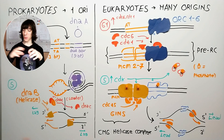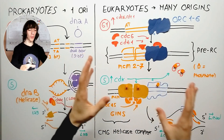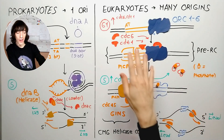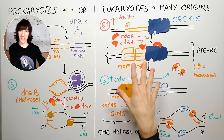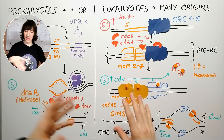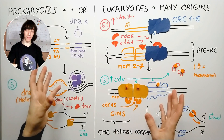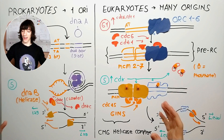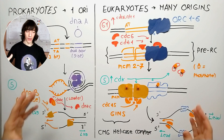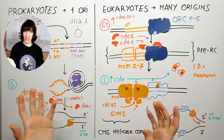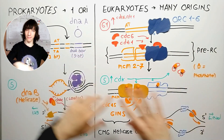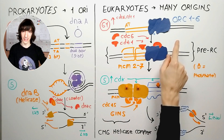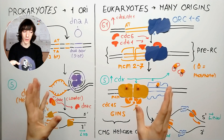Now that we are done with prokaryotes, it's time to go into eukaryotes — they are really cool. Eukaryotes have some interesting bits: they don't only have one chromosome, they have multiple chromosomes. But luckily, all the origins in those chromosomes are pretty much the same, so we can focus on only one and go from there. Still, we have to keep in mind that they have many origins — thousands, tens of thousands of origins.